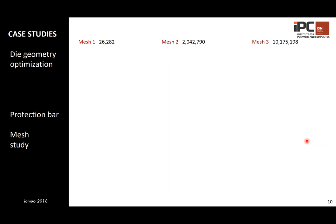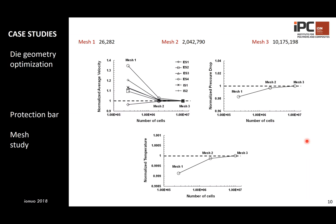Before advancing to the design studies, we performed a mesh sensitivity study to determine the required mesh refinement for accurate results. We computed several parameters including average velocity at the different subsections, pressure drop, and normalized outlet temperature, with all results normalized against the most refined mesh. The differences between mesh 2 and mesh 3 were not significant, so we decided to use mesh 2 to perform the studies.